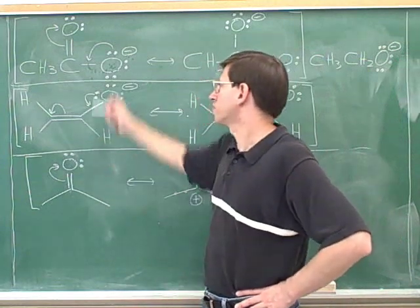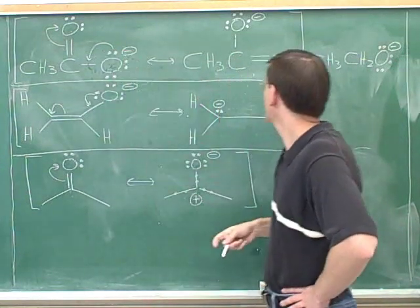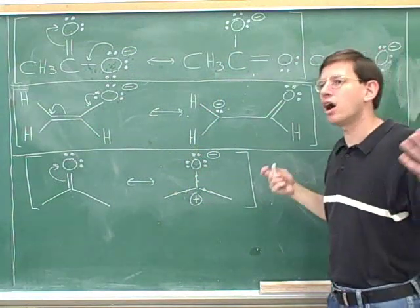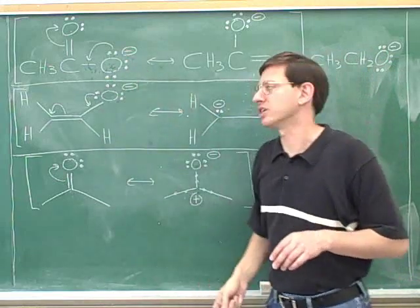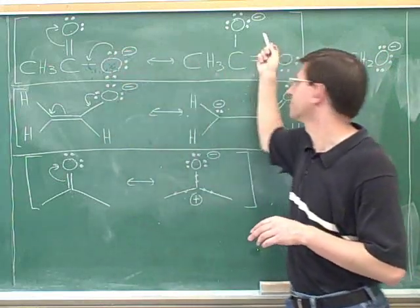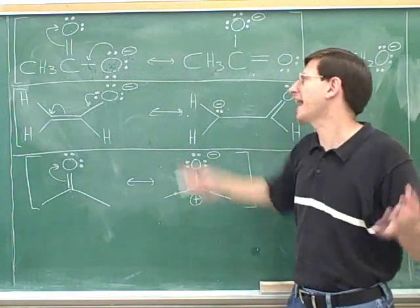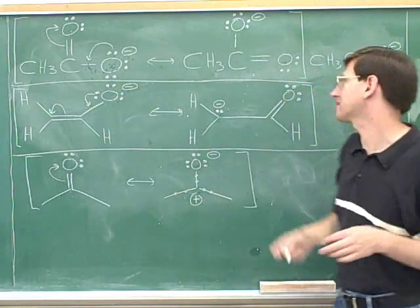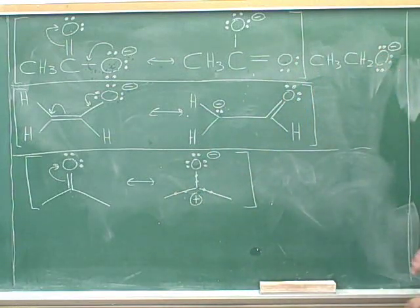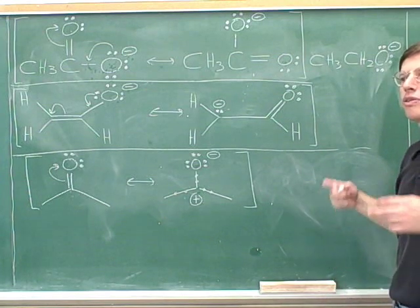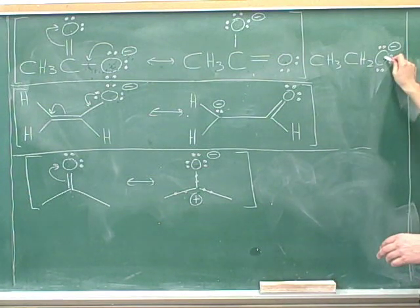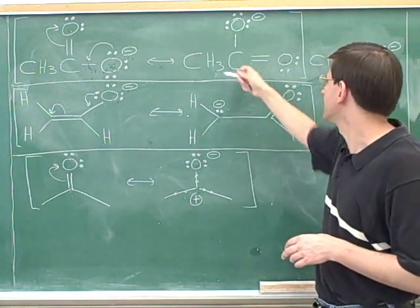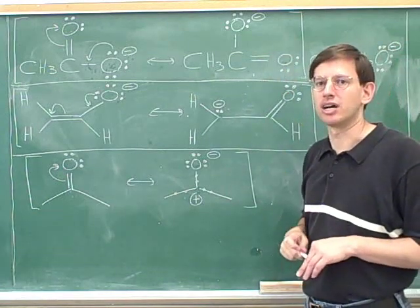Whereas for acetate, we do have one resonance structure where there's a negative charge on the oxygen, but we have another resonance structure where there's no negative charge on the oxygen. So overall, we know that there's not really a full negative on this oxygen. The true charge is a kind of average of these two pictures, so there's about half a negative charge on that oxygen. That means this oxygen is going to be much happier and much less reactive than the oxygen in ethoxide. So we would predict that this ethoxide with a full negative charge on the oxygen is going to be much more reactive than this acetate, where there's only about half a negative charge on the oxygen.